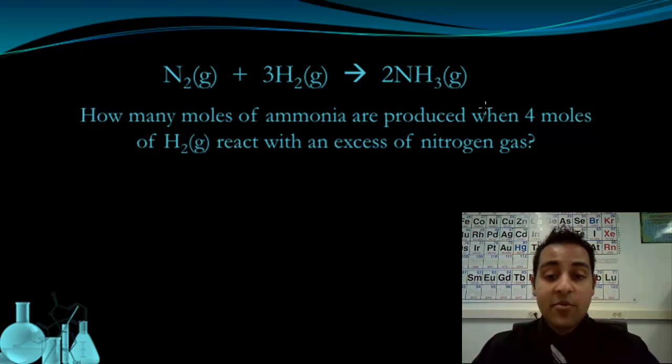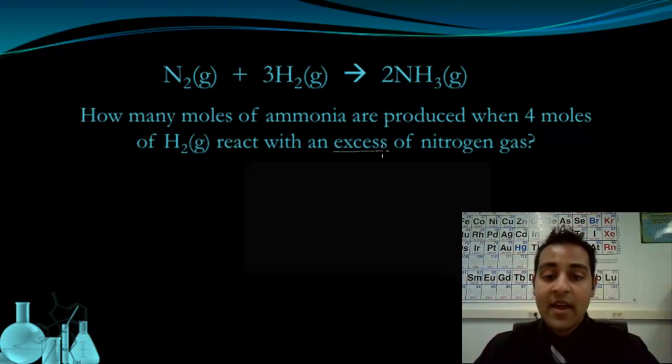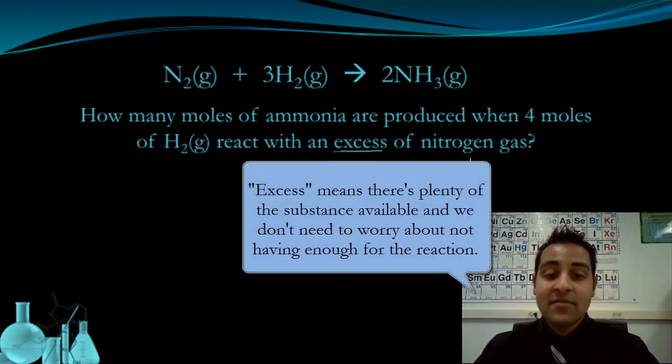Here we have the same reaction, nitrogen and hydrogen giving ammonia. Question asks, how many moles of ammonia are produced when four moles of hydrogen gas react with an excess of nitrogen gas? This term here, excess, means there's plenty of nitrogen and I don't need to worry about there not being enough for the reaction.